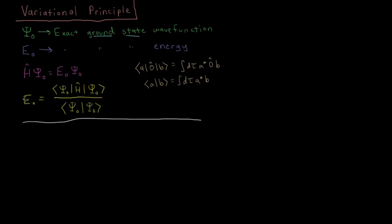The expectation value for this energy E-naught can be found by taking the integral of psi-star H psi over the entire range of that function — this is the Dirac bracket notation — divided by the integral of psi-star psi over the entire range, which is the normalization. If the wave function is normalized, the denominator becomes one, and the expectation value is just that top integral.